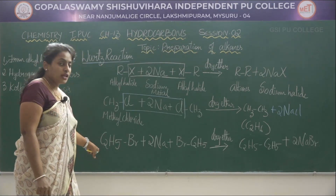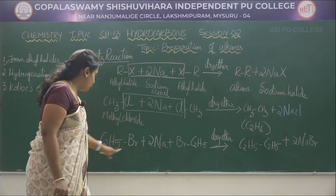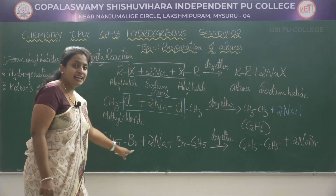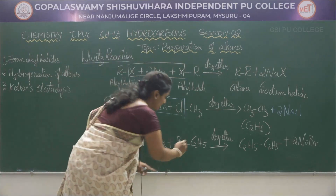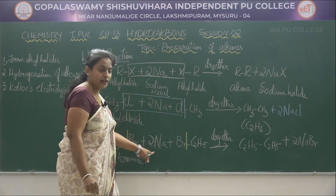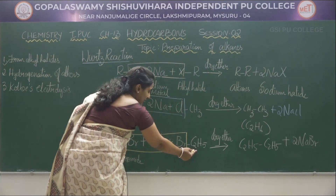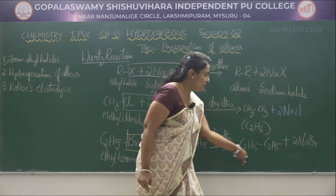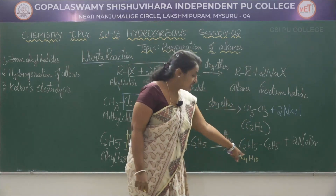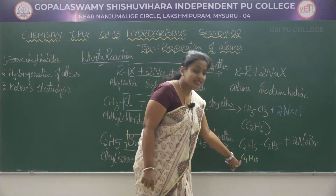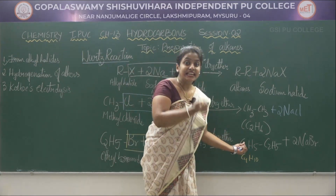In the next example, R = C₂H₅ (ethyl group) and halide = bromide, so the reactant is ethyl bromide. One bromide reacts with one sodium, and the other bromide reacts with another sodium to give 2 NaBr (sodium bromide). The two C₂H₅ groups combine to give C₂H₅-C₂H₅, which is C₄H₁₀ — butane. We used ethyl halide but obtained the higher alkane, butane.